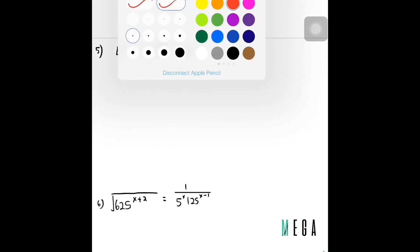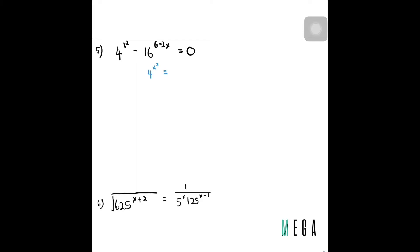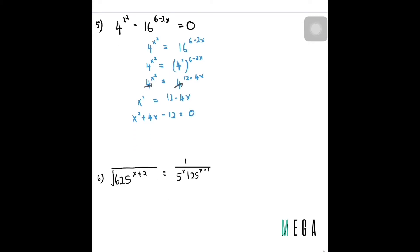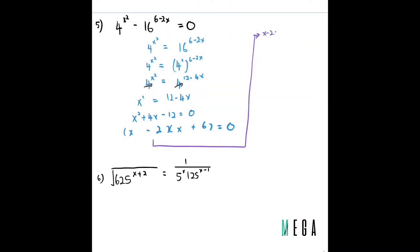The next question requires the same approach. Move the 16 to the right-hand side: 16^(6−2x). Since 16 is 4², I get 4^(x²) = 4^(2·(6−2x)) = 4^(12−4x). Cancelling the base gives x² = 12 − 4x, so x² + 4x − 12 = 0. Factorizing: (x − 2)(x + 6) = 0, so x = 2 or x = −6. Done.